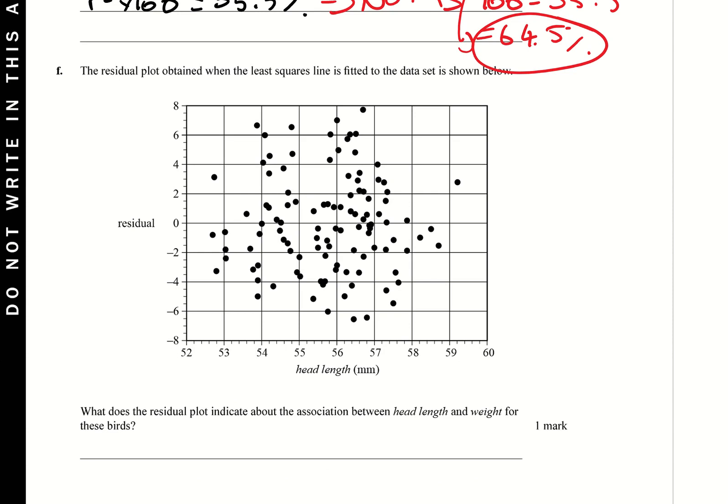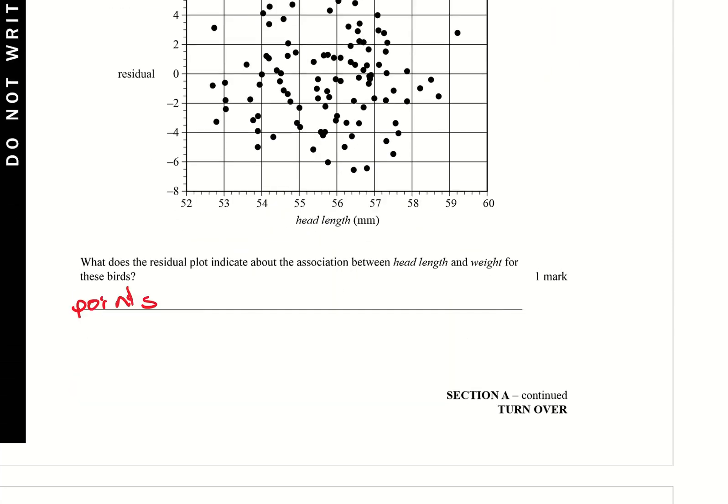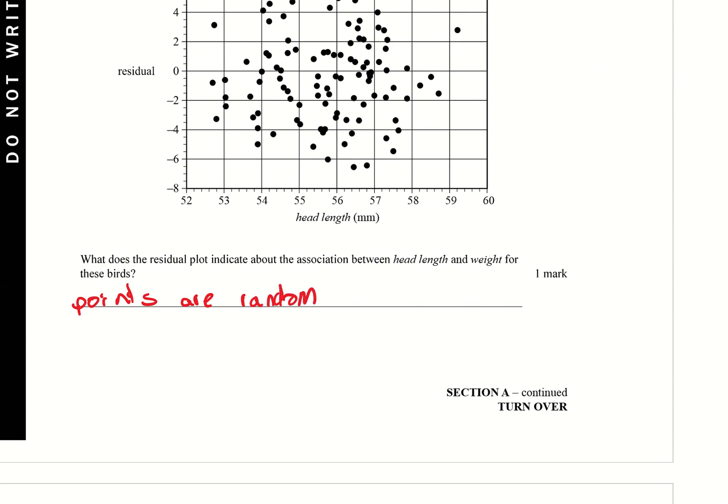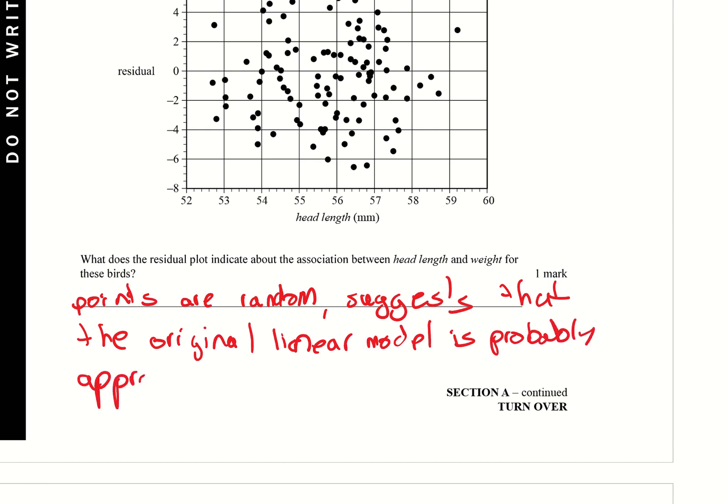The residual plot is obtained when the least squared line is fitted to data shown below. What does the residual plot indicate about the association between the head length and the weight? The points in this case, so the points are random, there's no pattern to them. So therefore this suggests that the original linear model is probably appropriate. If that showed a pattern you would say it's nonlinear, but it's random here, so we're going to say it's most likely going to be a linear graph, a linear model.